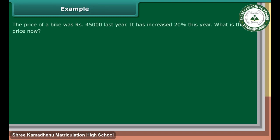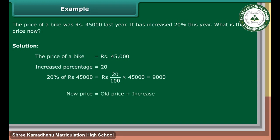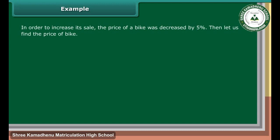Example: The price of a bike was Rs. 45,000 last year. It has increased 20% this year. What is the price now? Solution: The price of a bike is equal to Rs. 45,000. Increased percentage is 20. 20% of Rs. 45,000 is equal to Rs. 20 upon 100 into Rs. 45,000, which is equal to Rs. 9,000. New price is equal to old price plus increase, which is equal to Rs. 45,000 plus Rs. 9,000, which is equal to Rs. 54,000.